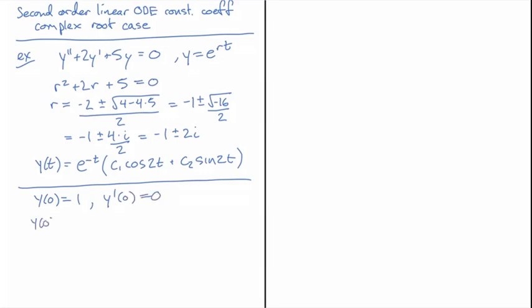Okay, so evaluating our solution at 0, we get e to the minus 0 is just 1. We get a cosine of 0, that's 1, and a sine of 0, that's 0. So I'm left with c1 out of all that, and c1 has to be equal to 1.